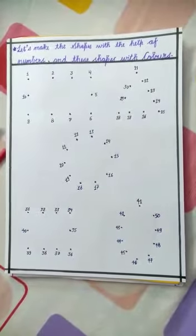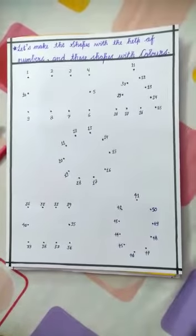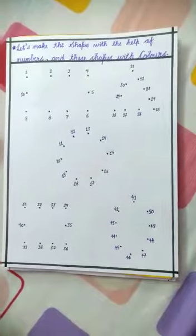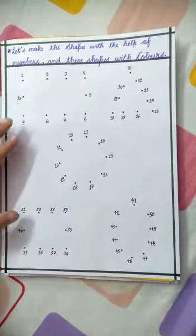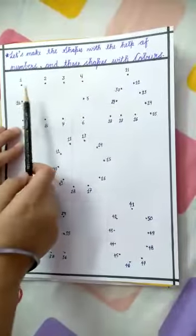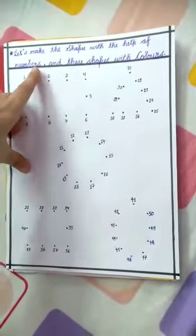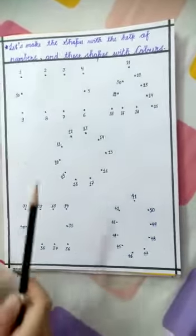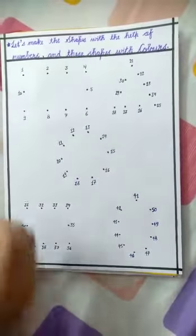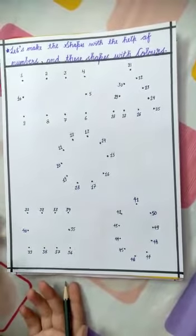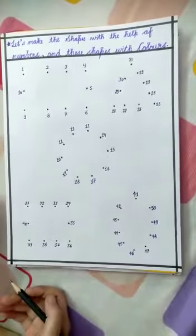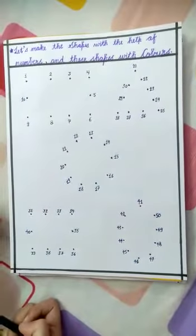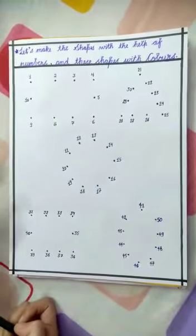Hello kids, this is your teacher Samran Kaur. I hope you enjoyed your summer vacation and stayed safe at home. Today your ma'am is here with a new revision activity. We have to make shapes with the help of numbers and color these shapes — number recognition, joining numbers, making shapes and coloring. We can use our favorite colors, and after vacation we will start our work. So this is study time — let's start!